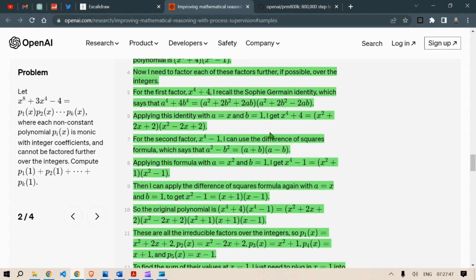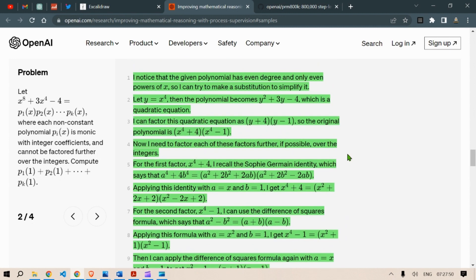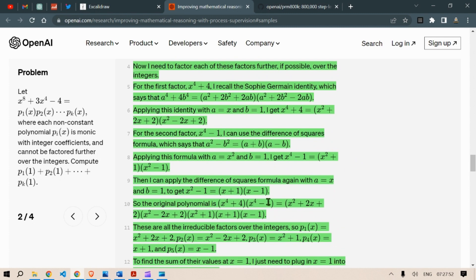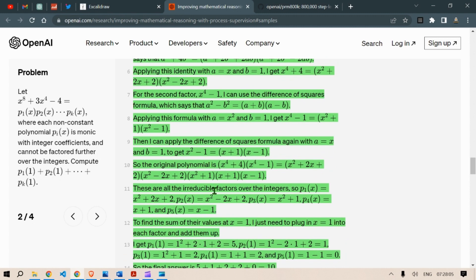So the original polynomial, which is x to the power 4 plus 4, which is in step 3, x to the power 4 minus 1, this can be written in terms of these five terms. x square plus 2x plus 2, x square minus 2x plus 2, x square plus 1, x plus 1, x minus 1. So these five terms. Now these are the irreducible factors, cannot be factored further, over the range of integers.